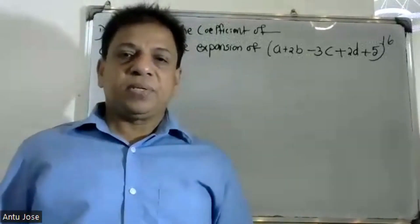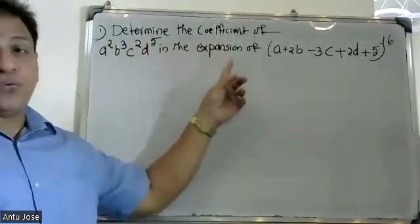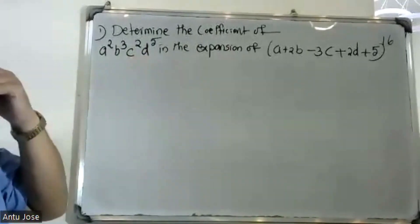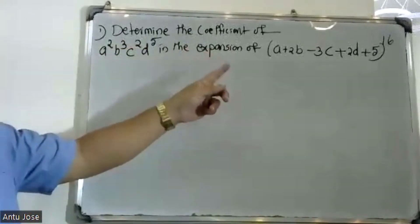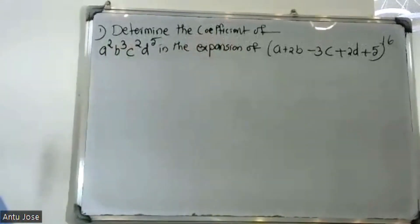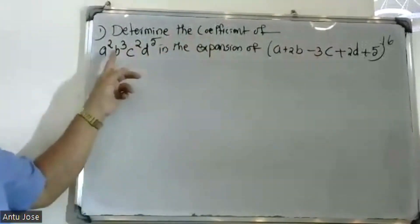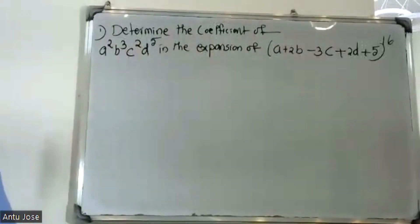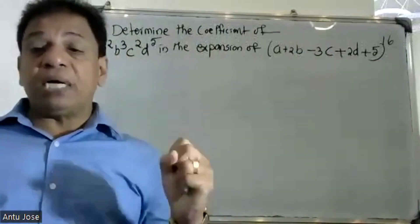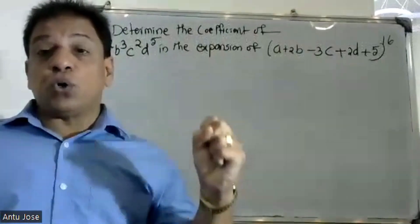Good morning students. Determine the coefficient of a squared b cubed c squared d raised to 5 in the expansion of (a + 2b - 3c + 2d + 5) raised to 16.